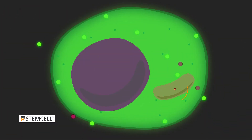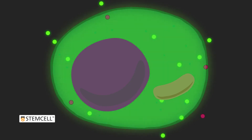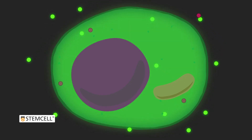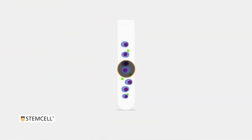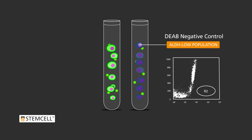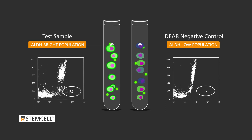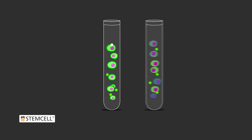The DEAB control cells will still express a baseline level of fluorescence due to the free diffusion of the activated Aldiflor reagent into the cells. By comparing the fluorescence levels of the ALDH low population in the DEAB negative control sample and the ALDH bright population in the test sample, you will be able to detect your desired cell population.